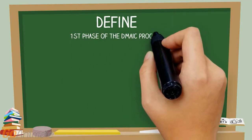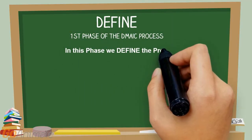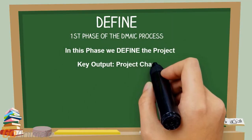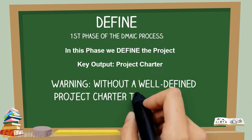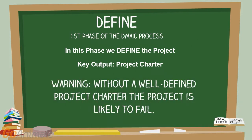Define is the first phase of the DMAIC process. Here we define the project via the Project Charter, the key output of this phase. The Project Charter is a very important document that will be updated throughout the DMAIC process. Without a well-defined Project Charter, the project is likely to fail.